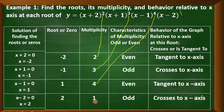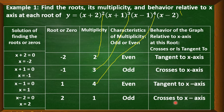After determining the multiplicity of each root, it's now time to determine the behavior. We base this on whether the multiplicity is even or odd. Multiplicity 2 is even, so the graph is tangent to the x-axis at negative 2. Multiplicity 3 is odd, so it crosses the x-axis at negative 1. Multiplicity 4 is even, so it is tangent to the x-axis at positive 1. And multiplicity 1 is odd, so it crosses the x-axis at positive 2.